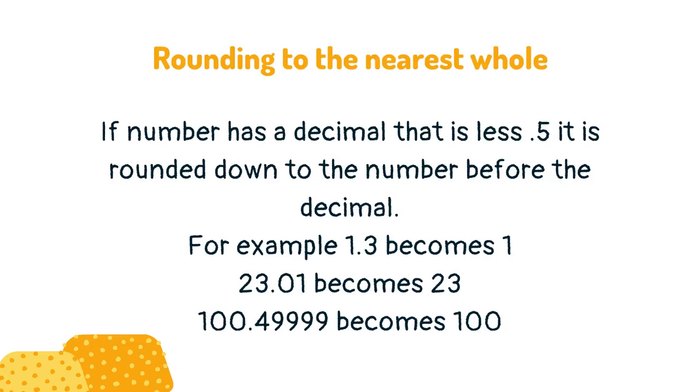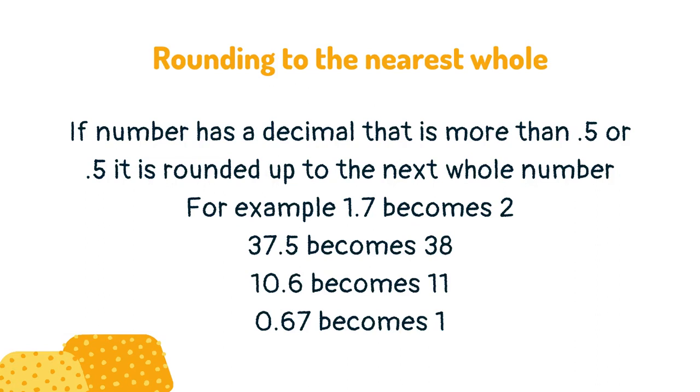If a number has a decimal that is less than 0.5, it is rounded down to the number before the decimal. If a number has a decimal that is more than 0.5 or equals 0.5, it is rounded up to the next whole number.